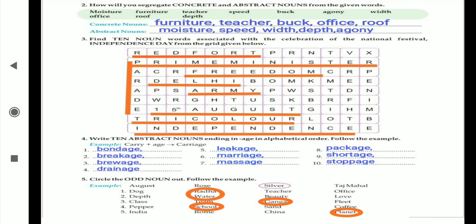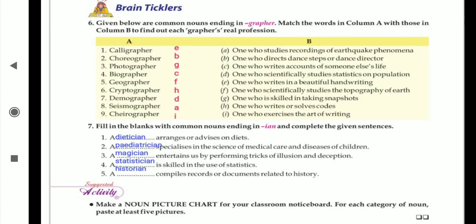Now paper, school, sand, and coffee. Which is different? School. Why? Because paper, sand, and coffee are material nouns. Fifth last one: India, Rome, China, and planet. We know that India, Rome, and China are proper nouns and planet is the common noun. These all you are going to complete in your textbook.